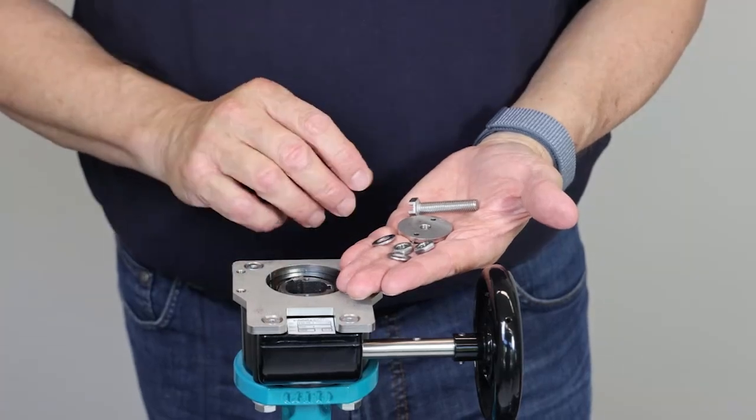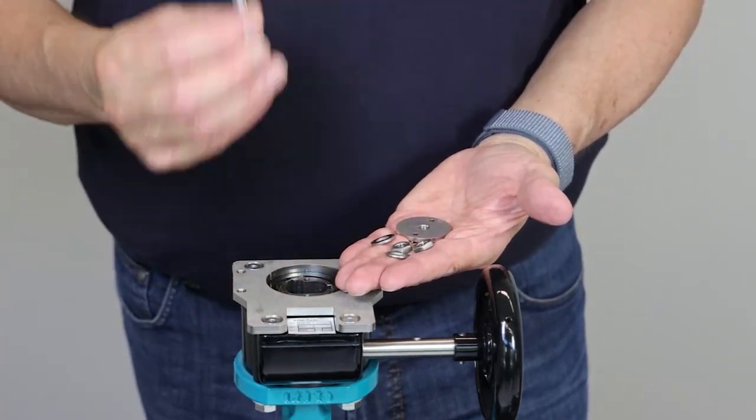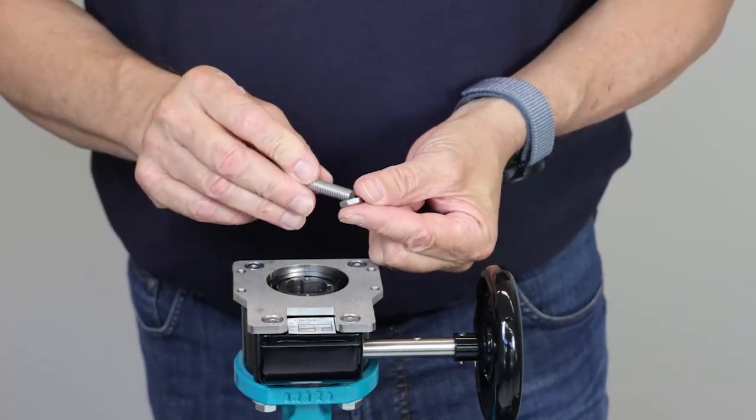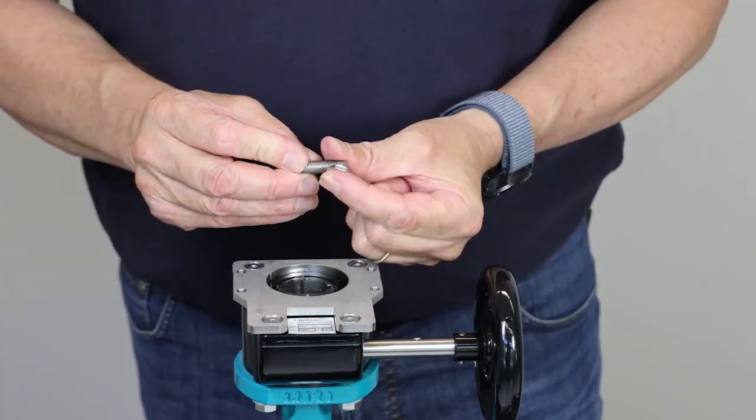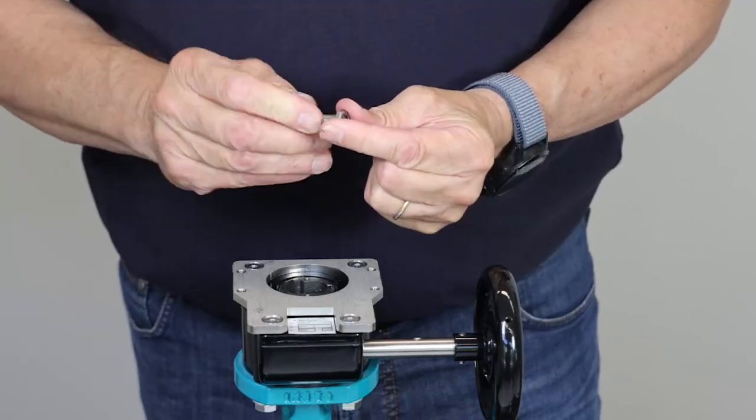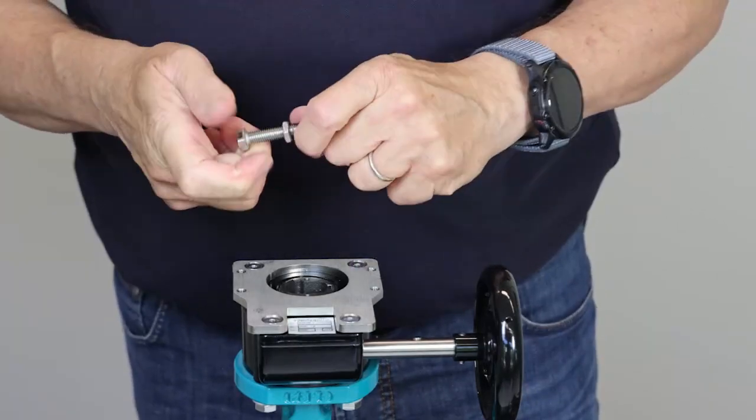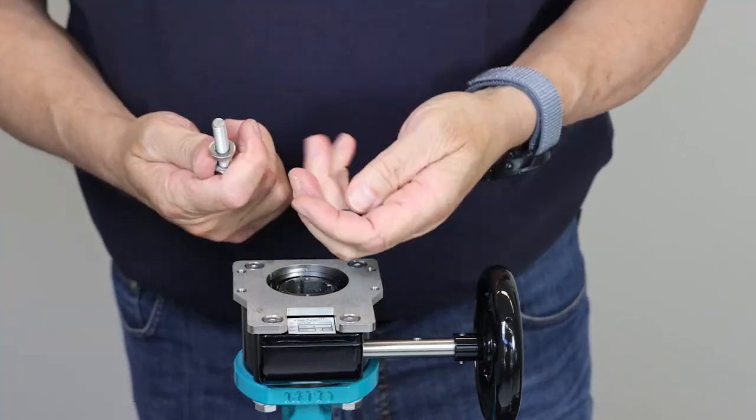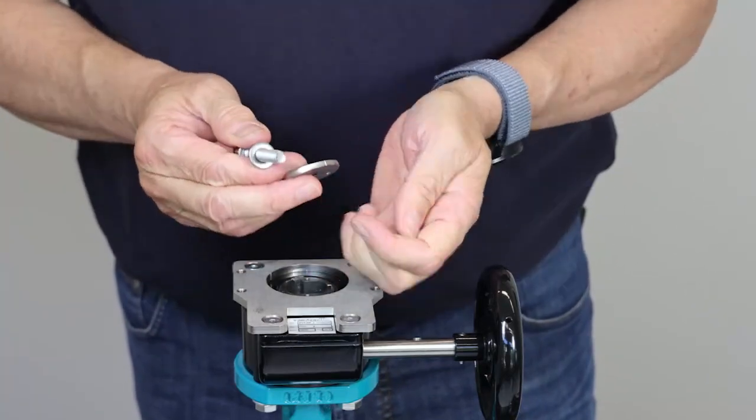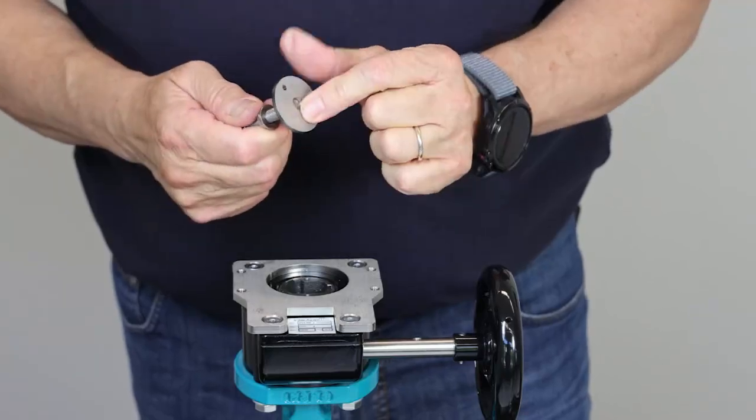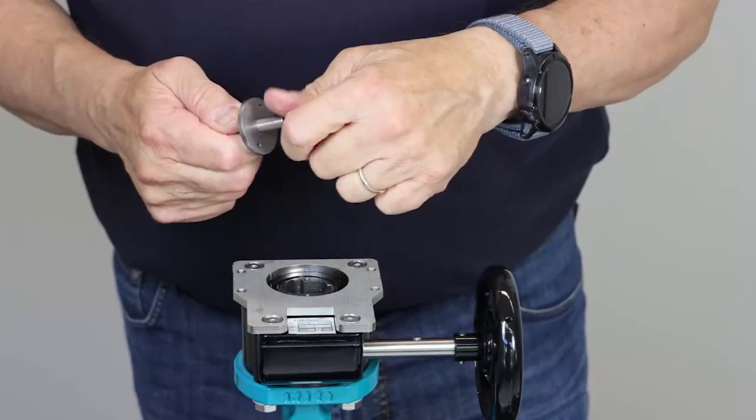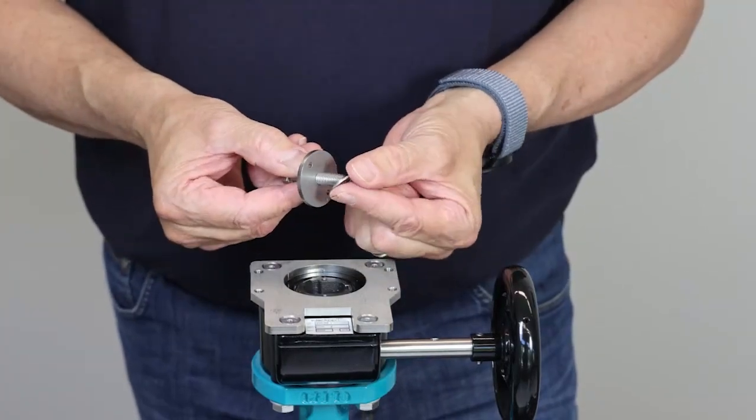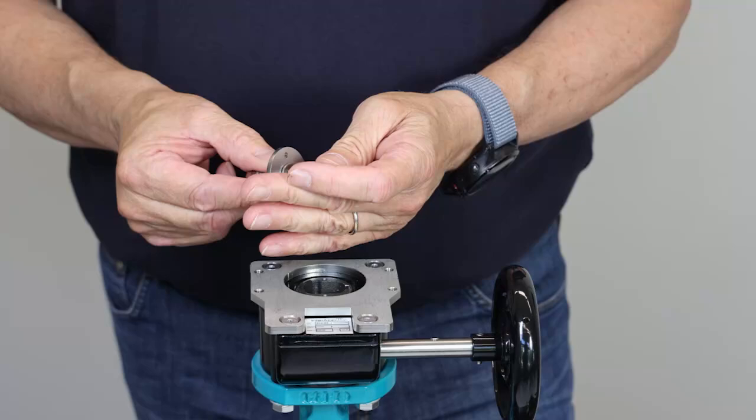As next we need to prepare the driver that is needed to operate the limit switch box. For this I put the first nut on the screw, I put the first washer, then I turn in the driver washer. I use the second washer and the second nut.